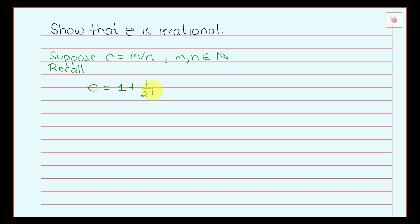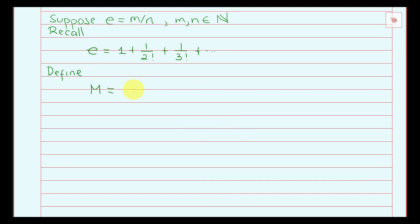Recall that e can be written as 1 plus 1 over 2 factorial plus 1 over 3 factorial and so on. Now define m to be e minus the partial sum: 1 plus 1 over 2 factorial all the way up to 1 over n factorial, where n is exactly the n we are assuming in our rational expression. So this is 1 over n factorial.